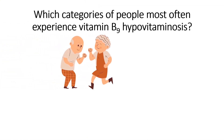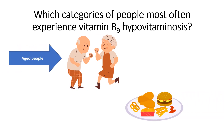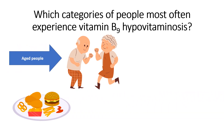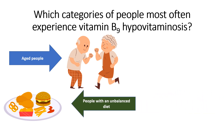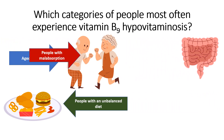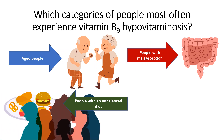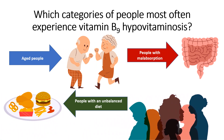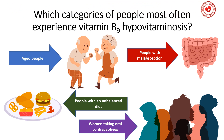Which category of people most often experience vitamin B9 hypovitaminosis? Vitamin B9 hypovitaminosis most often occurs in the following people: people with an unbalanced diet, aged people, women taking oral contraceptives, and people with malabsorption.